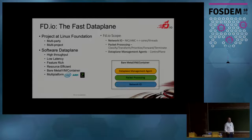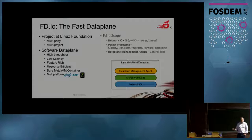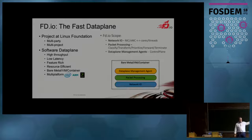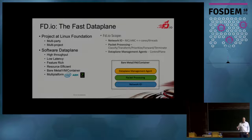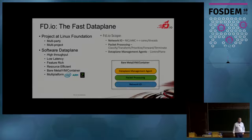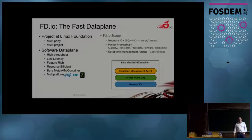VPP stands for Vector Packet Processing. It's an open source project under the Linux Foundation, and it is actually under another umbrella project called FD.io, which stands for FastData.io. VPP is software that does packet processing — it reads packets, forwards them, modifies them, and forwards them again.